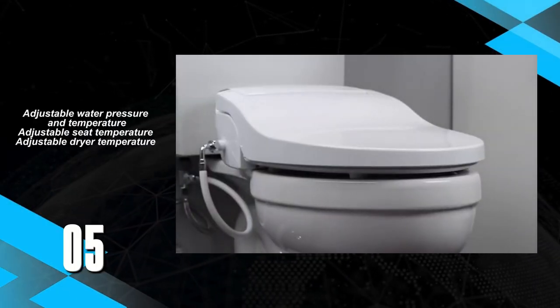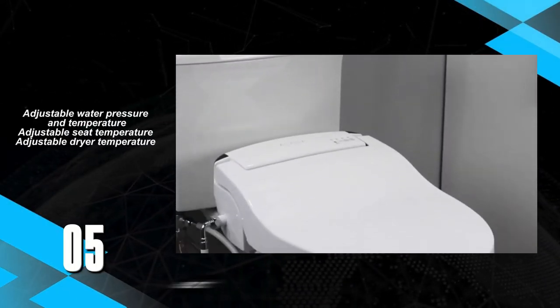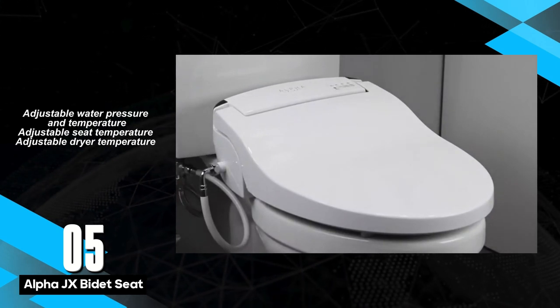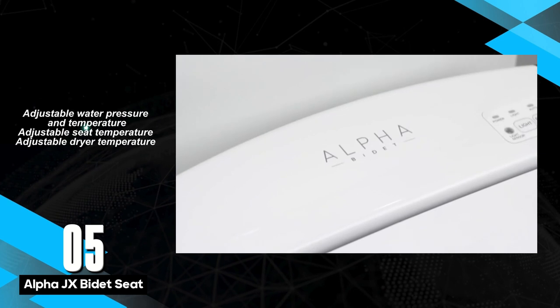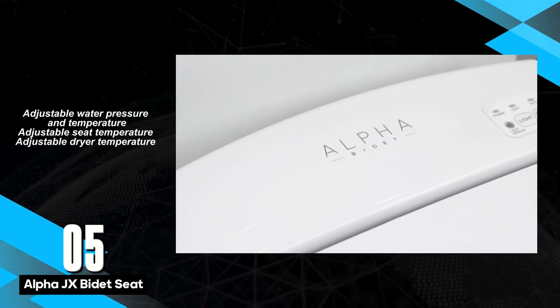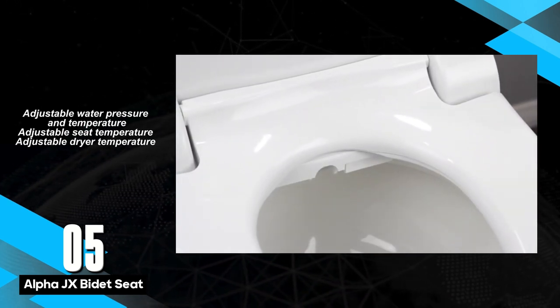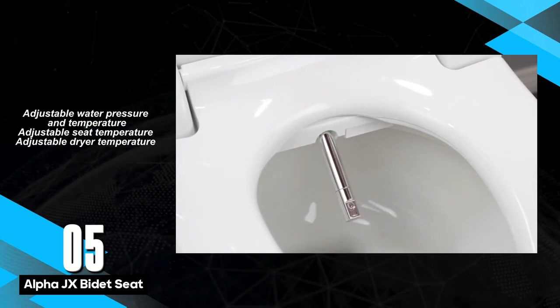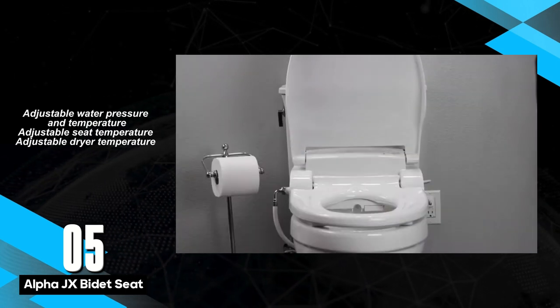The Alpha JX Bidet seat presents users with a functional design and thoughtful engineering, delivering a comfortable and solid cleaning performance. However, its notable drawback lies in its remote control, known for its finicky nature and potential to cause unexpected changes in water pressure, detracting from the overall user experience.